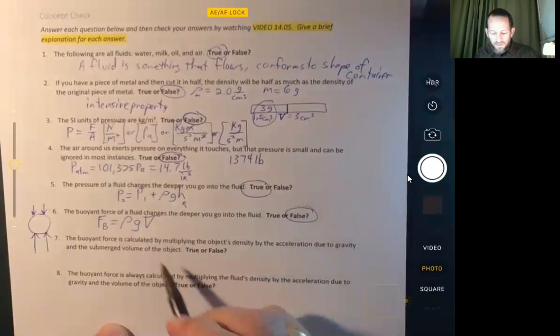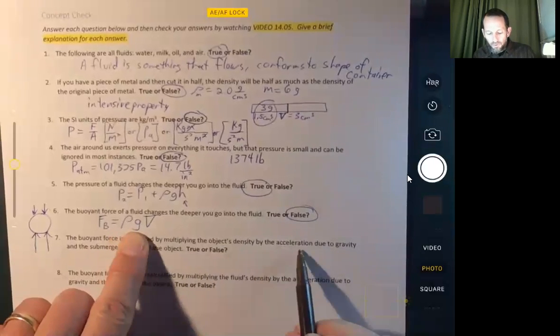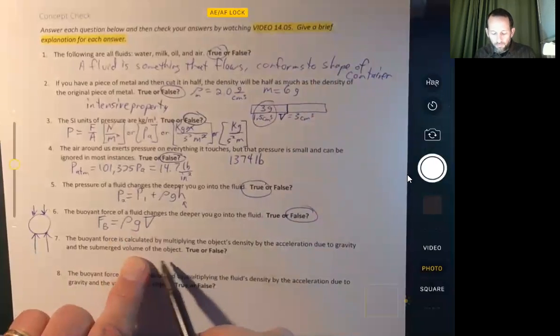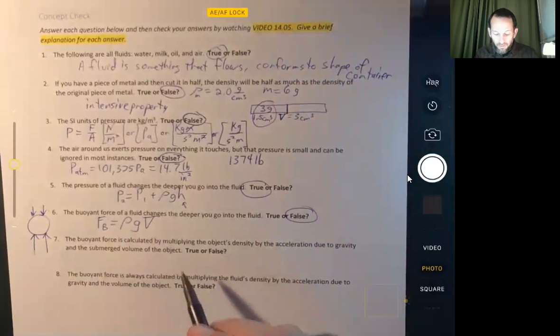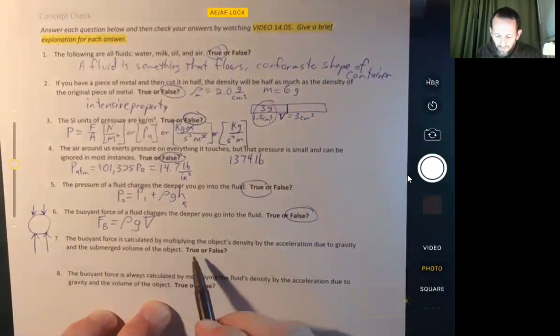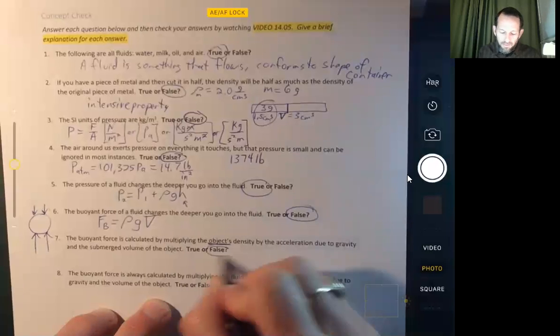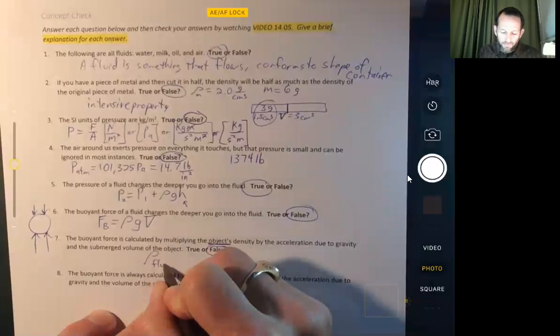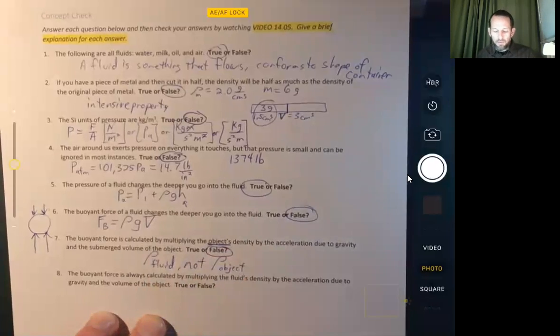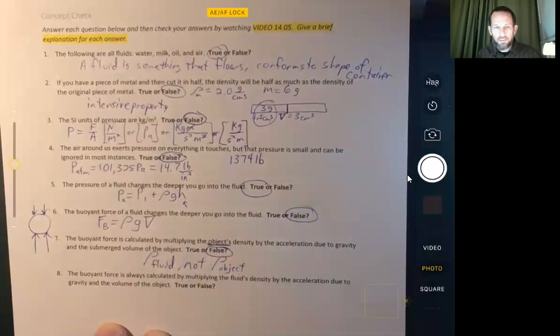Now the buoyant force is calculated by multiplying the object's density times the acceleration due to gravity times the volume of the object or the submerged volume of the object. And so it looks like this is probably true until you realize it said the object's density. So that's false. It's the density of the fluid, not the density of the object. Because what this does is it allows us to calculate the weight of fluid displaced. So the density of the object has no place there.